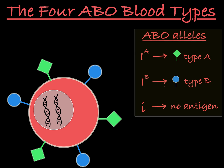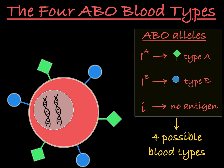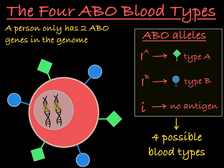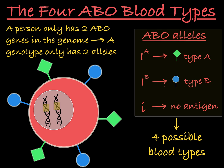So let's look at how these three alleles result in four different blood types. It's important to remember that even though there are three different alleles for this ABO gene, a person's genome only has two copies of this gene and therefore a person's genotype can only have two alleles.